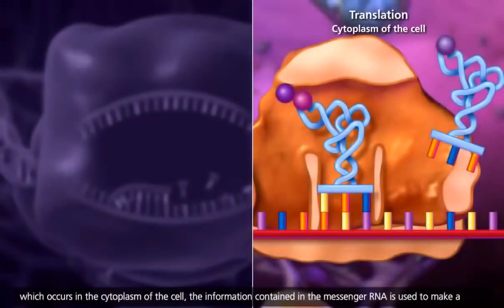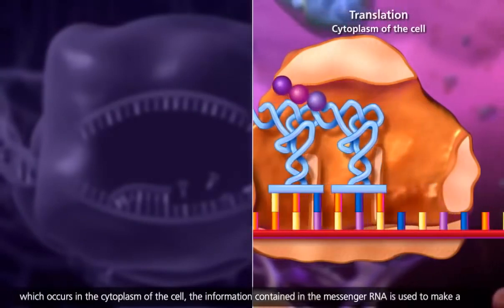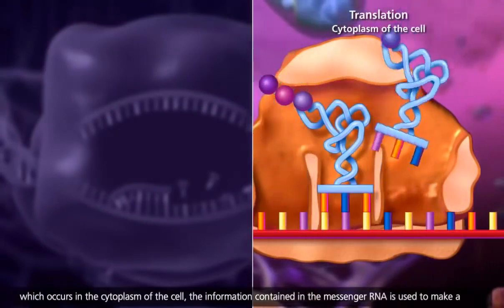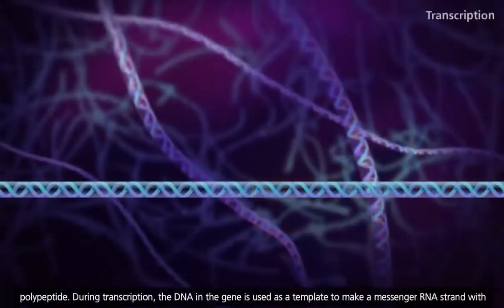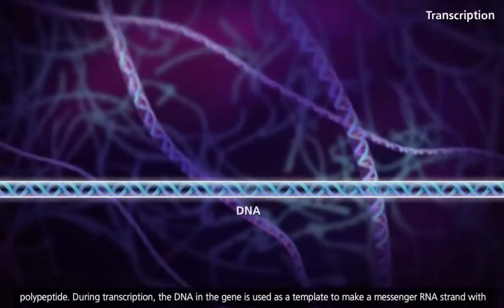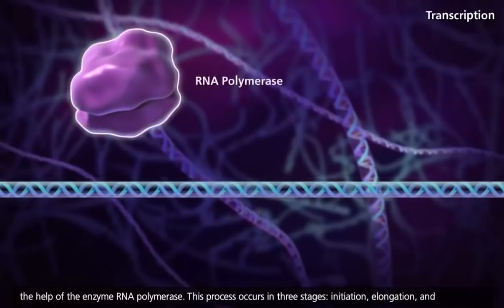Then in translation, which occurs in the cytoplasm of the cell, the information contained in the messenger RNA is used to make a polypeptide. During transcription, the DNA in the gene is used as a template to make a messenger RNA strand with the help of the enzyme RNA polymerase.